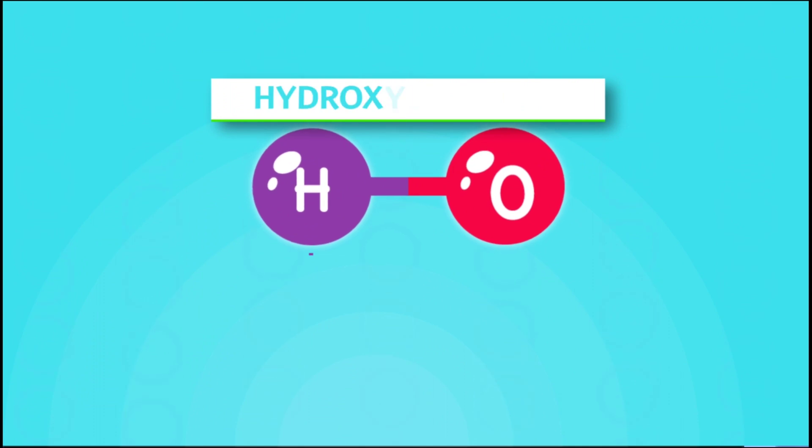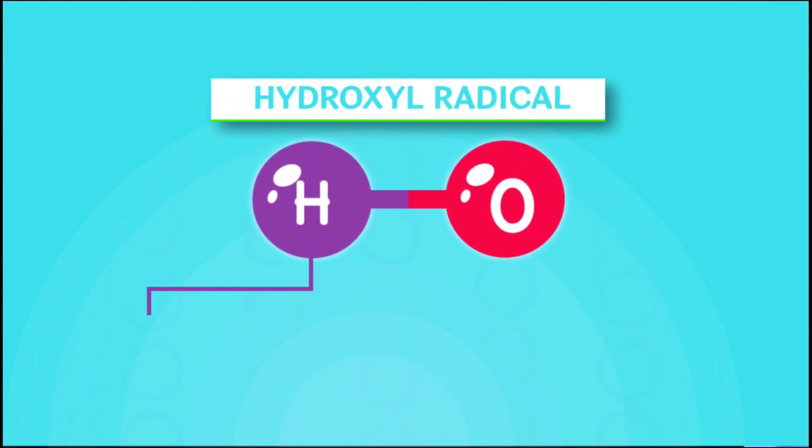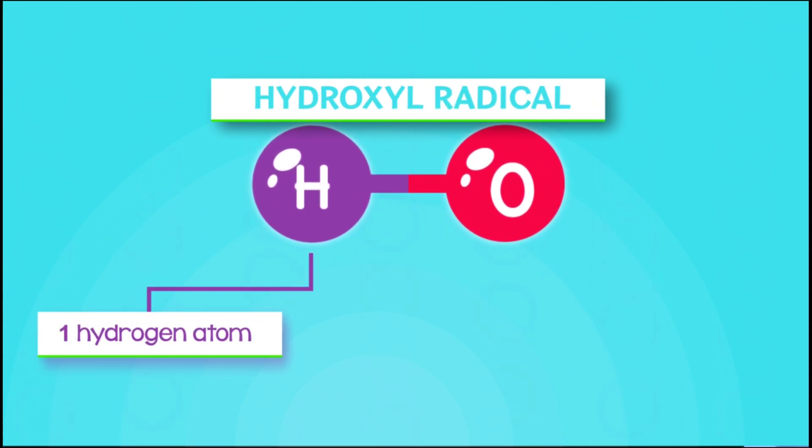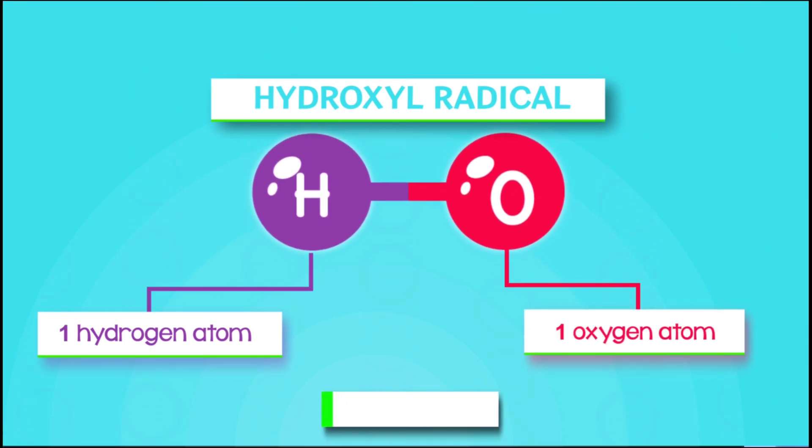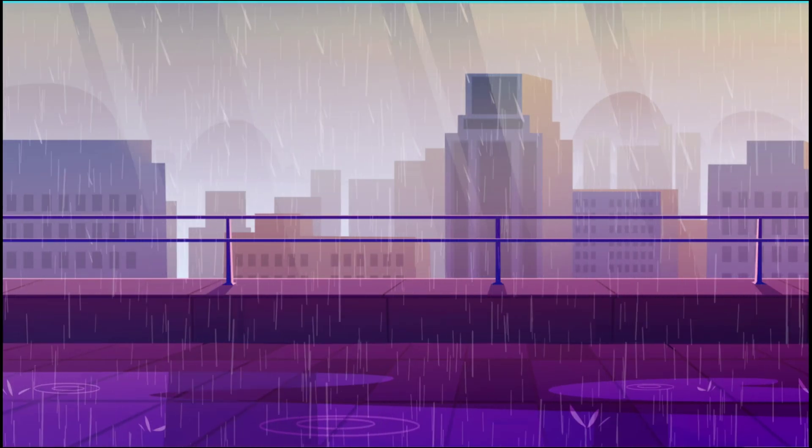One is the hydroxyl radical, which consists of one oxygen atom and one hydrogen atom. It is written as -OH. This radical is very reactive and can be found in some chemical reactions, like in the air during a thunderstorm.